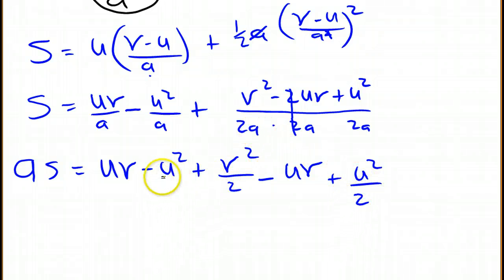Now I've got minus u squared plus u squared over 2. So that's going to be 1 minus 1 plus 1 half, which is negative u squared over 2. So let's get rid of those.